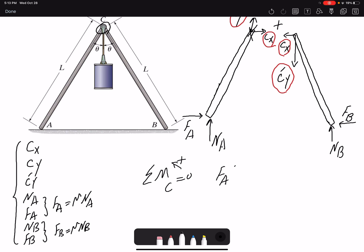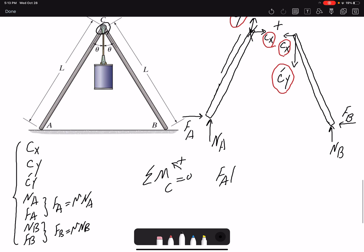FA creating a counterclockwise moment - if the total distance is L, if this is theta, then the moment arm for FA would be simply L cosine theta. And for NA would be, this distance would be L sine theta. These are the moment arms.